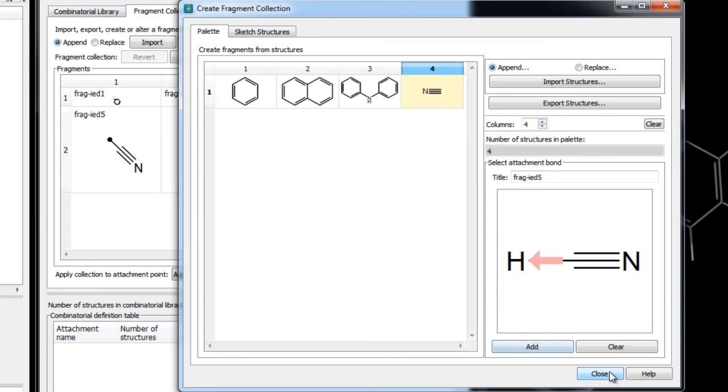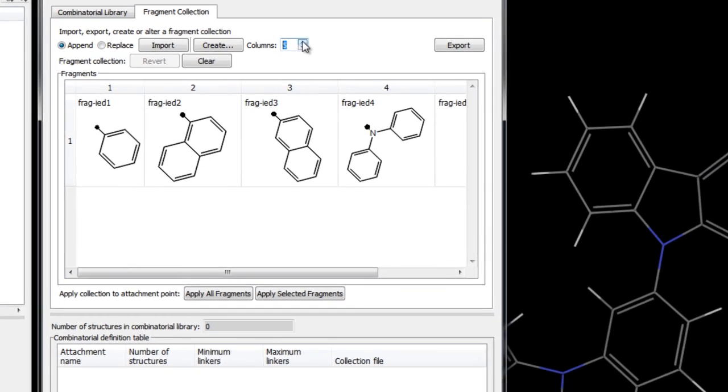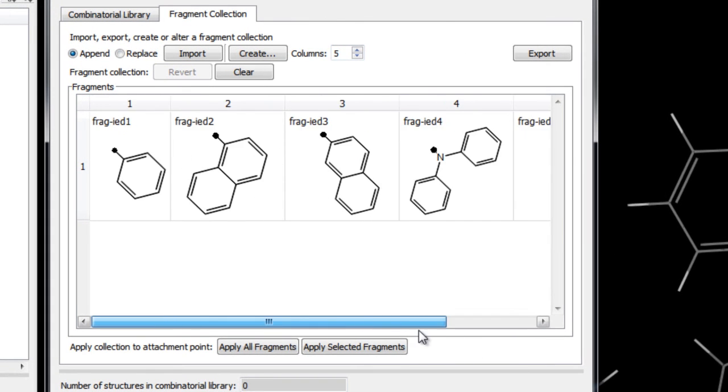Once this is done, click close to go back to the interactive enumeration panel, and now these fragments are ready to be applied to the attachment point defined on the core. Or if you intend on reusing these fragments, then it would be wise to export it to a fragment collection file.